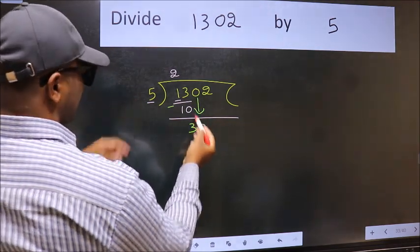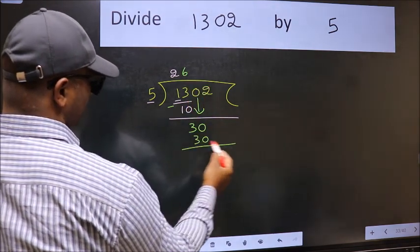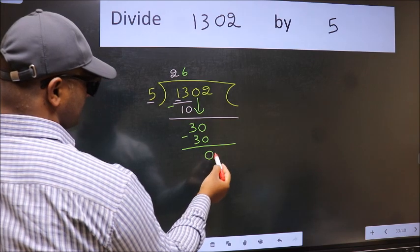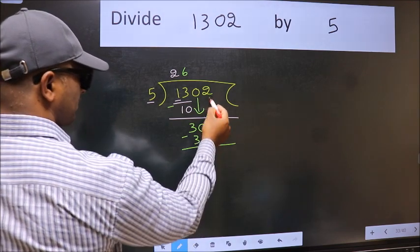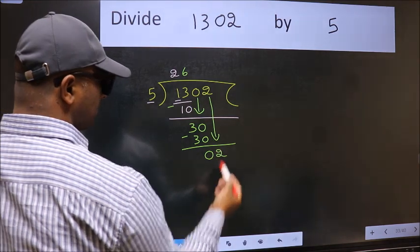When do we get 30 in 5 table? 5 times 6 is 30. Now we subtract, we get 0. After this, bring down the beside number. So, 2 down. After this step...